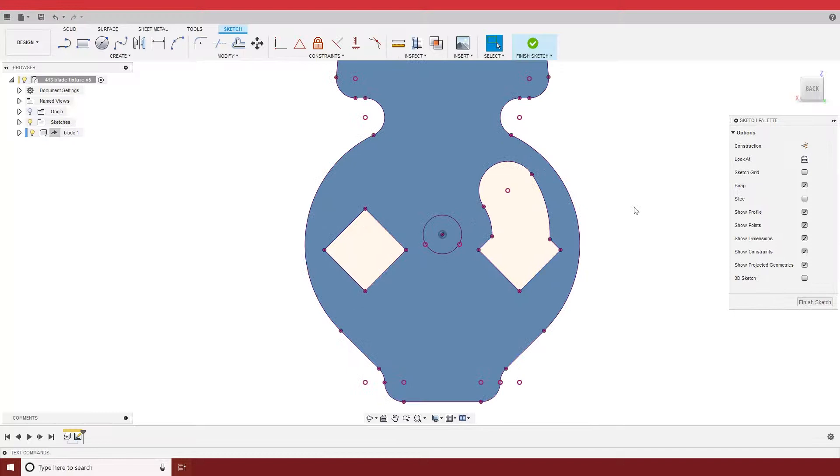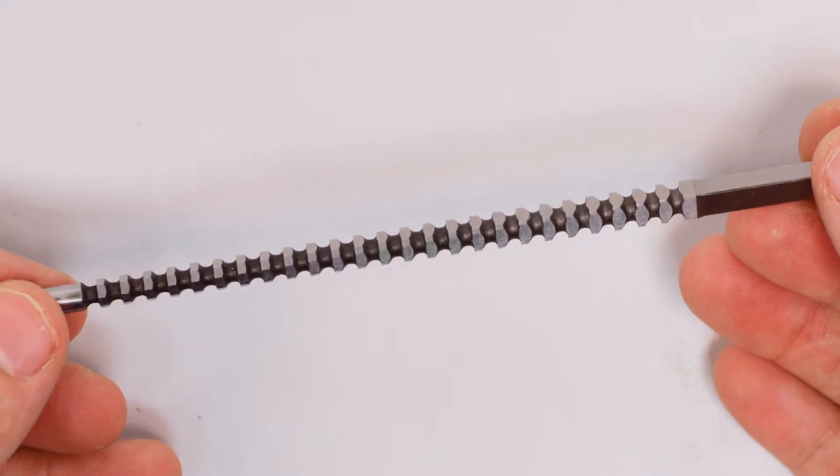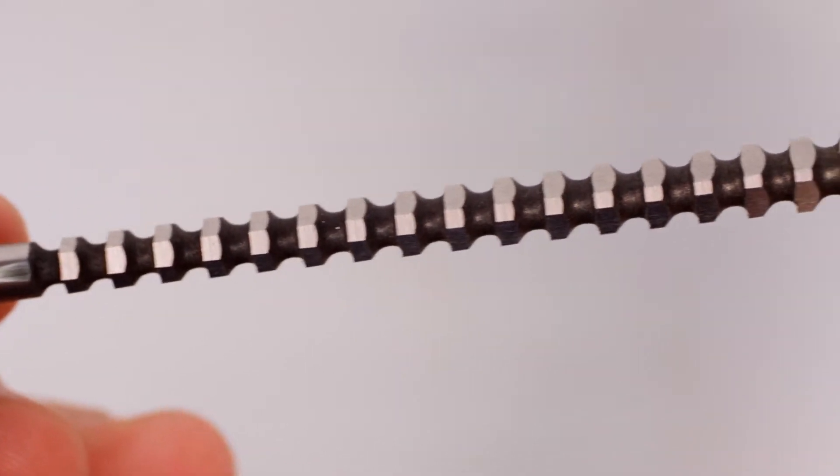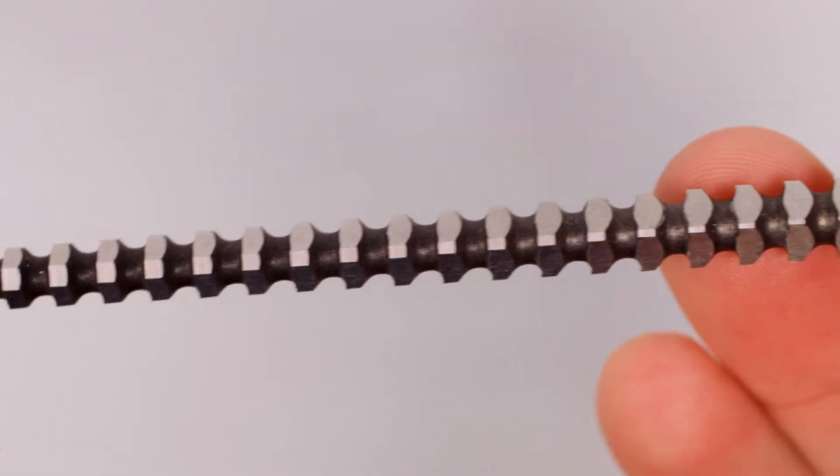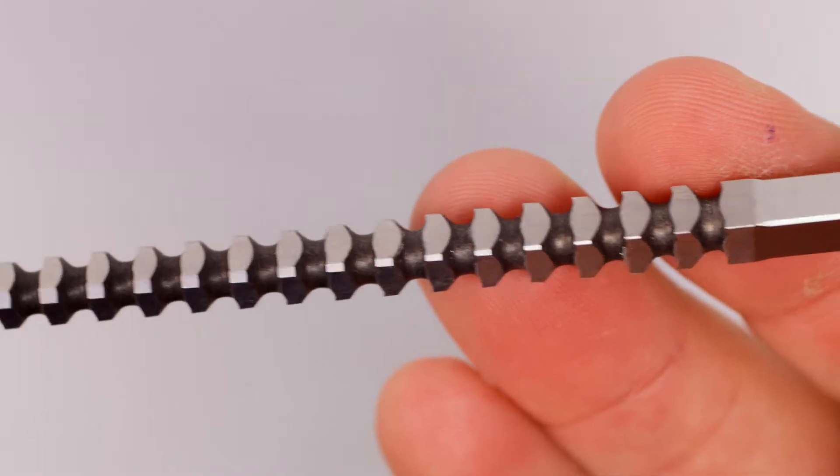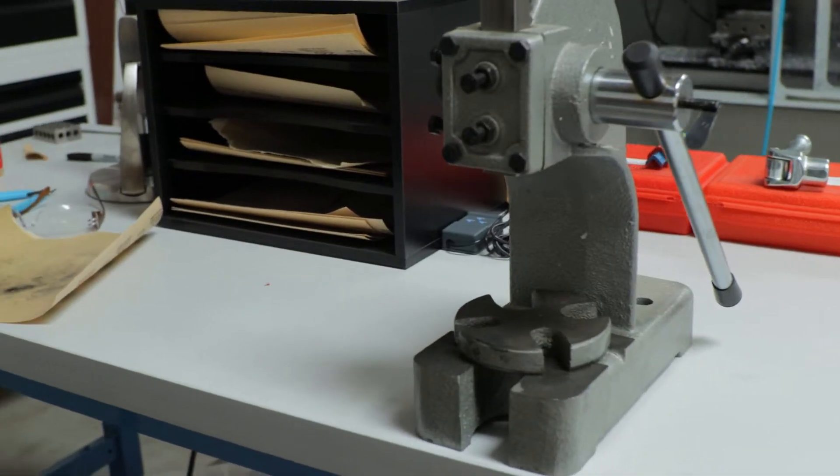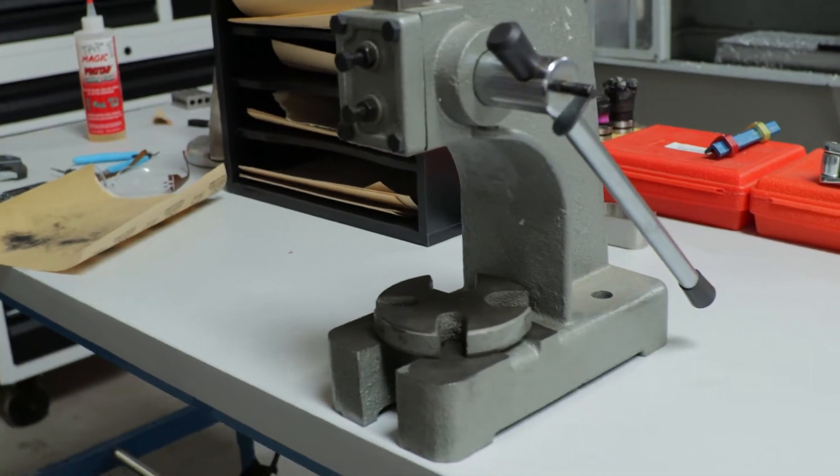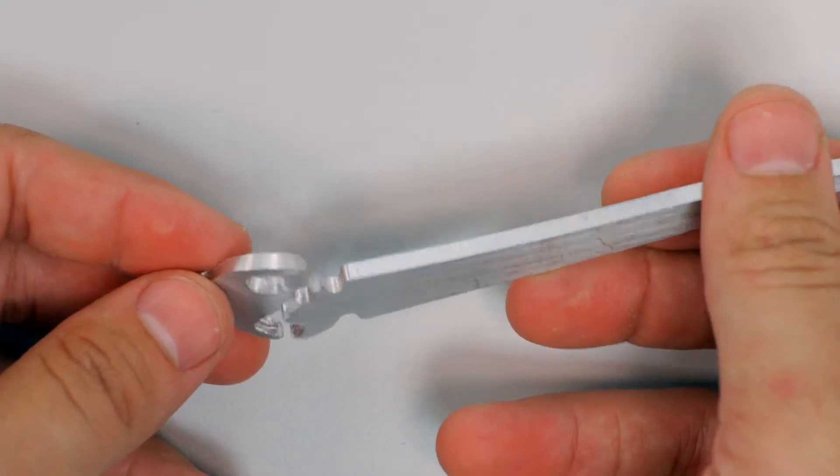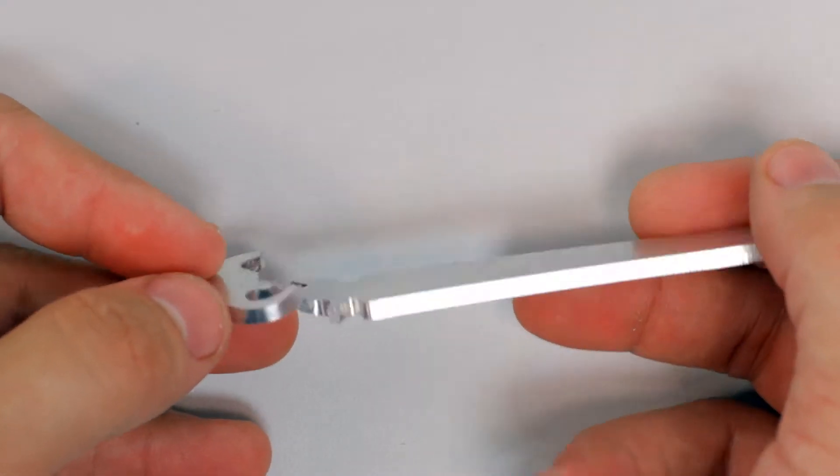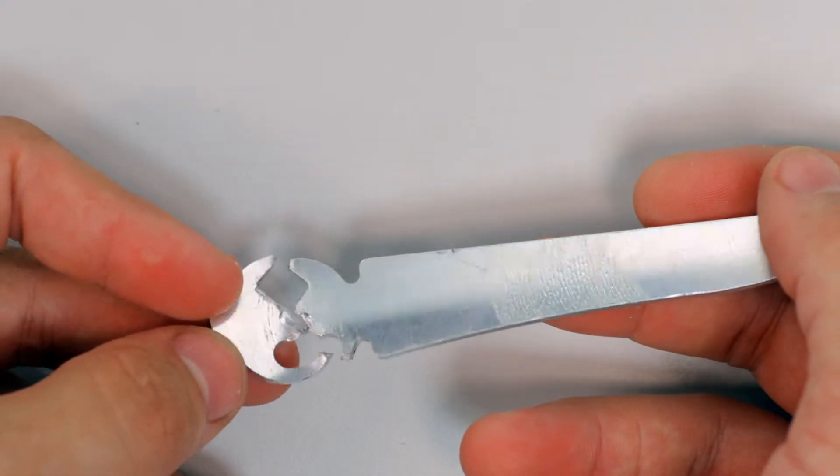To make the square holes, I wanted to try using a broach. A broach works by pushing an escalating series of teeth that start out round, but then become square or whatever other shape. Unfortunately, I don't really have a great setup for broaching, and so I ended up bending the part and then I bent it back and at that point I guess it had work hardened because the part ended up snapping.